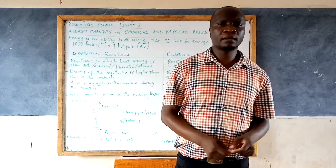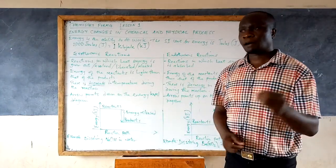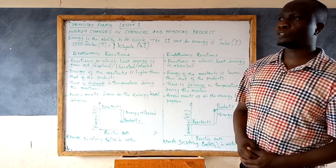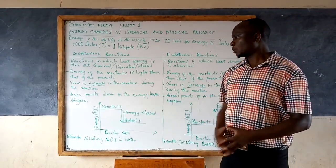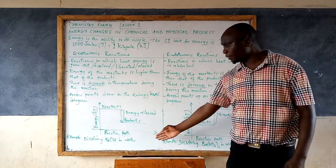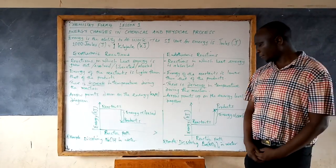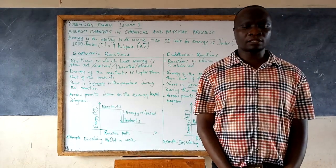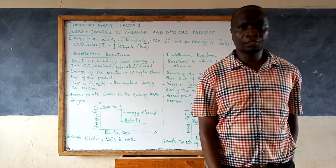That will mark the end of our first lesson. In the next lesson, we are going to see how to represent the data for the two on the energy level diagram — draw the energy level diagram for the dissolving of sodium hydroxide and also draw the energy level diagram for the dissolving of barium nitrate. That will be covered in our next lesson number two. Thank you.